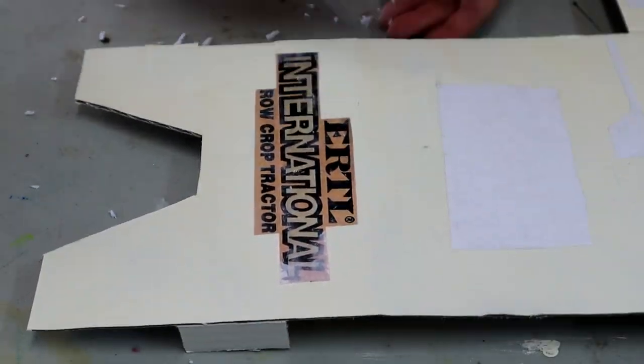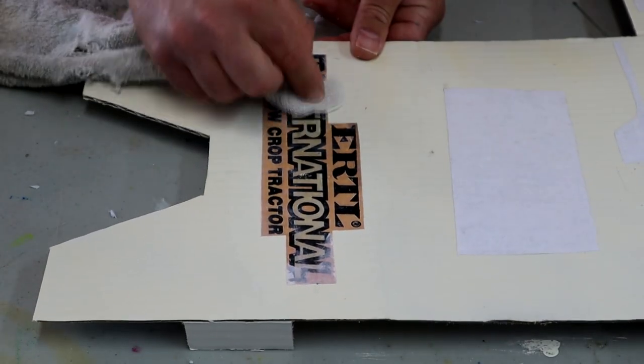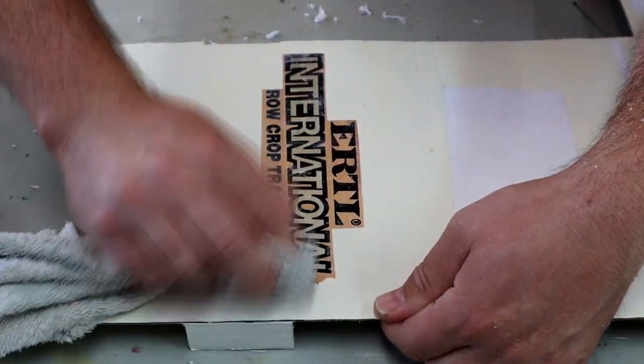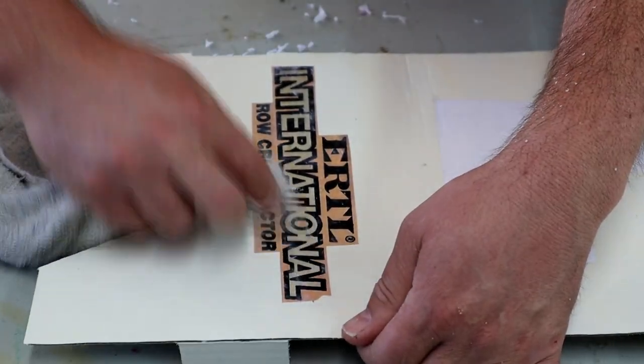And if you've got some of the Mod Podge on the backside, you're going to have to apply a little bit more water in those areas to sort of release the Mod Podge's hold on the paper backing.